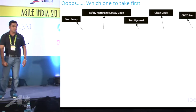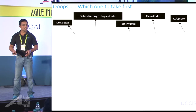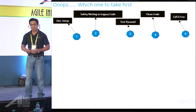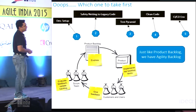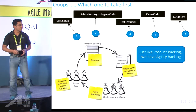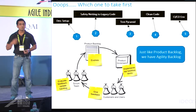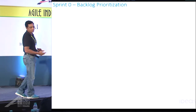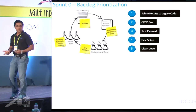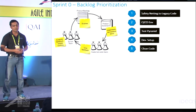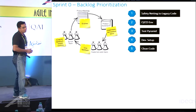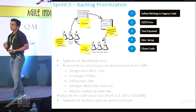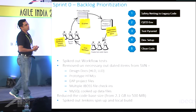Now we're facing a challenge — which engineering practice to pick first? All of them are important. So just like a product backlog, we treated this as an agility backlog: pick the most important item that will deliver something fruitful. We did our sprint zero — a couple of weeks where we did backlog prioritization and figured out what to tackle one at a time. We also wanted developers and QA to not be scared of the legacy code.